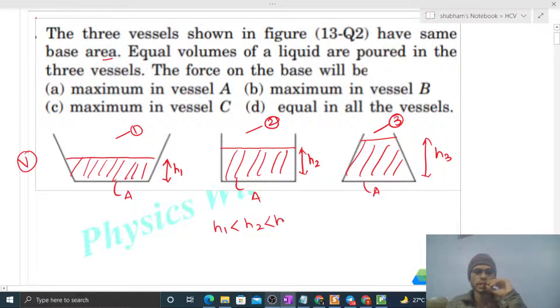Now you can see the relation that h1 will be less than h2 will be less than h3, because the base area is the same. Going upward, in vessel 1 the cross-sectional area increases, in vessel 2 it's constant, and in vessel 3 the cross-sectional area decreases. That's why the height relation will be maximum for vessel 3 and minimum for vessel 1.